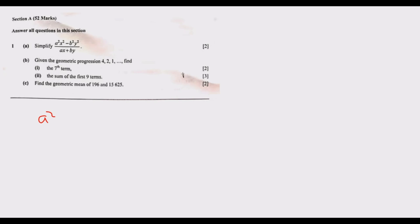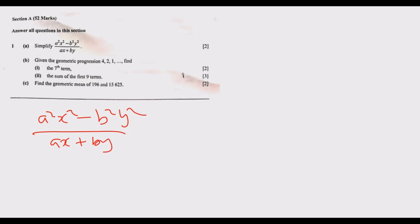Question 1a says simplify. We are simplifying a squared x squared minus b squared y squared, all over ax plus by. The denominator is already simplified, so the operation we need to perform is on the numerator.